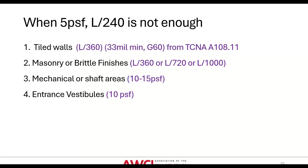Mechanical or shaft areas are going to need 10 to 15 PSF depending on the situation. Entrance vestibules sometimes require 10 PSF, being open to the exterior. Regarding shaft areas specifically: multiple high-speed elevators have been shown to create up to 15 PSF pressures in those shafts — something to be aware of for interior shaft walls. The design team should specify where these higher requirements are needed, but sometimes everything is in three different places, and it's up to us to put it together.